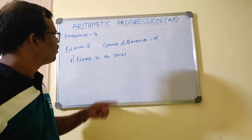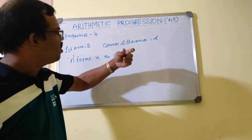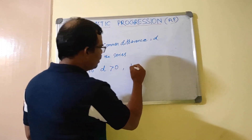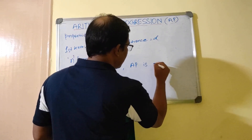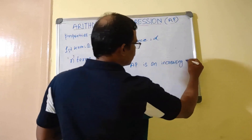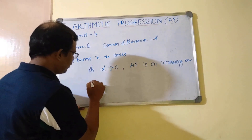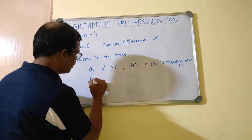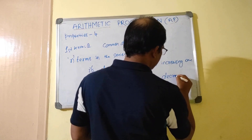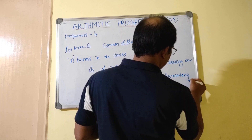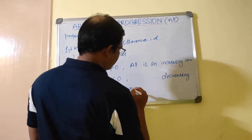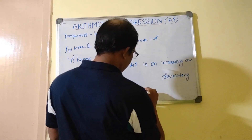The fourth property is about the common difference. If d is greater than 0, then the arithmetic progression is an increasing one. If d is negative, or less than 0, then it will be a decreasing one. And it is a no-brainer: if d becomes 0, then basically all numbers are equal. This is the fourth property.